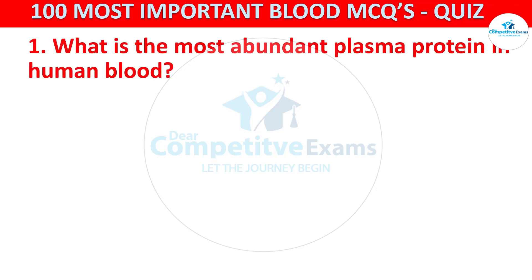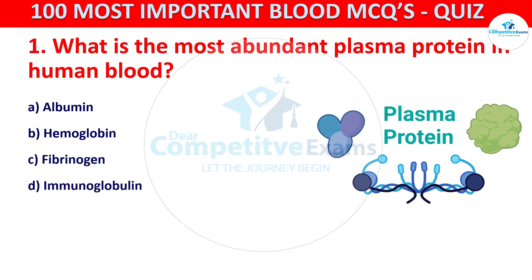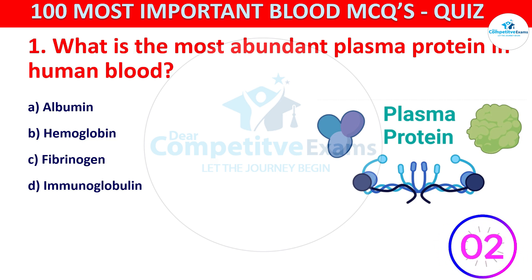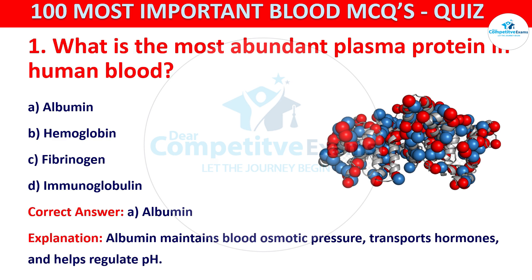What is the most abundant plasma protein in human blood? Your options are albumin, hemoglobin, fibrinogen, or immunoglobulin. The correct answer is A, that is albumin. Albumin maintains blood osmotic pressure, transports hormones, and helps to regulate pH level.